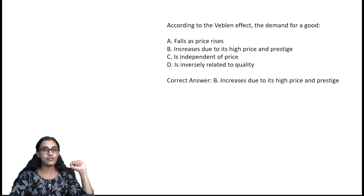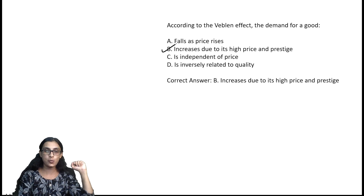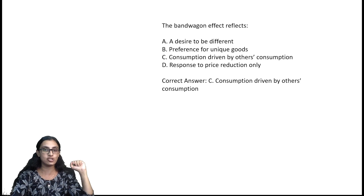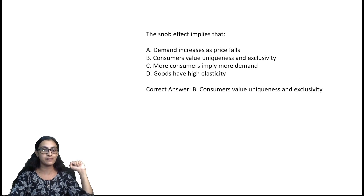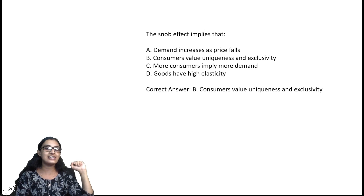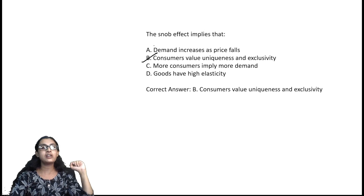According to the Veblen effect, the demand for a good increases due to its high price and prestige — option B. The Bandwagon effect reflects consumption driven by others' consumption — option C. The Snob effect implies that consumers value uniqueness and exclusivity — option B.